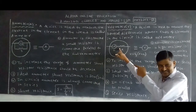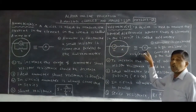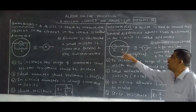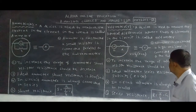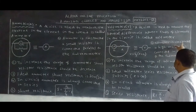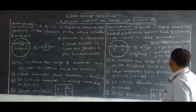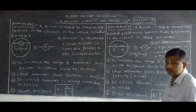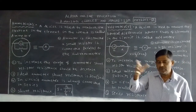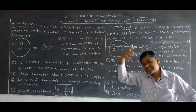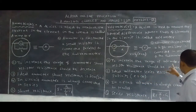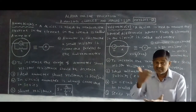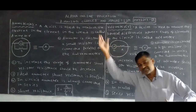A high resistor is connected in series to the galvanometer — it is converted into a voltmeter. The formula is: V = Ig × (r + G). To increase the range of the voltmeter — 1 volt, 2 volt, 5 volt, 10 volt, 100 volt — the series resistor resistance should be increased. When series resistor resistance increases, the voltmeter range also increases.